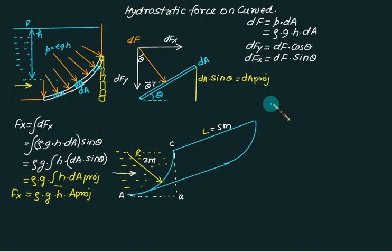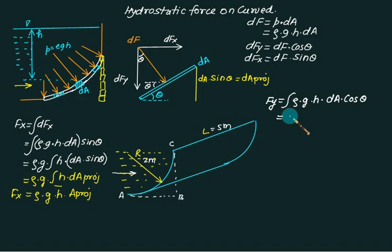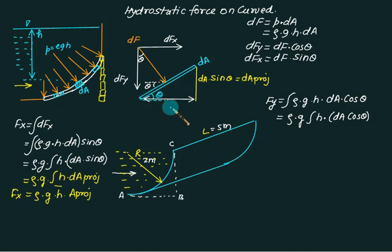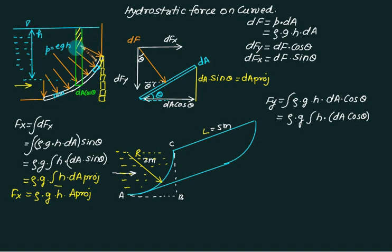Now let us understand the concept of Fy. Fy is the integral of dF times cos theta, which equals rho times g times H times dA times cos theta. Taking rho and g outside, we are left with the integral of H times dA times cos theta. The term dA times cos theta is a horizontal area element, and H times dA times cos theta is nothing but a volume element dV. So dV is the volume of liquid above the gate.